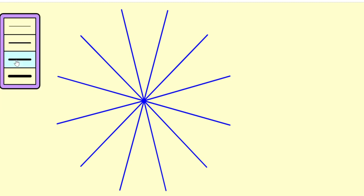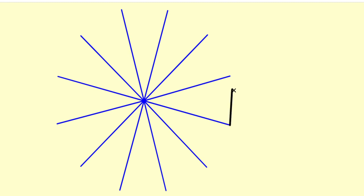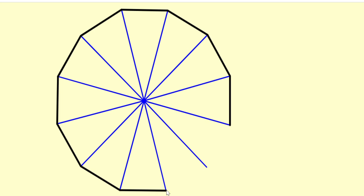Let us join the endpoints of the arm lengths by using straight lines. So we got a side, two side, three side, four side, five, six, seven, eight, nine, ten, eleven, twelve.